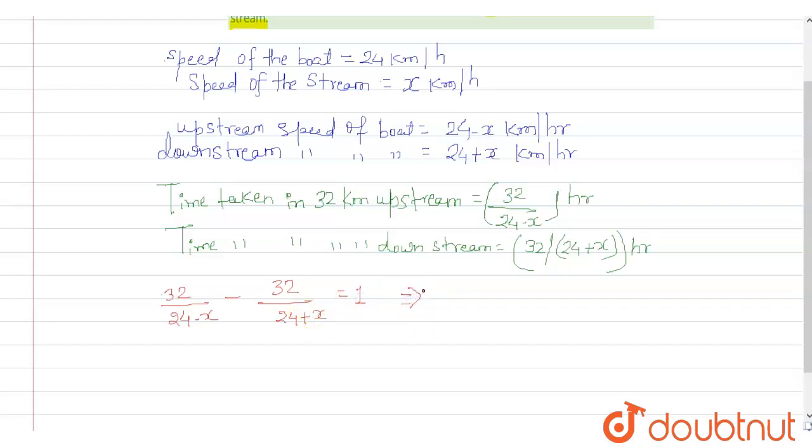Simplifying: 32(24+x) - 32(24-x) = 576 - x². This gives us x² + 64x - 576 = 0.